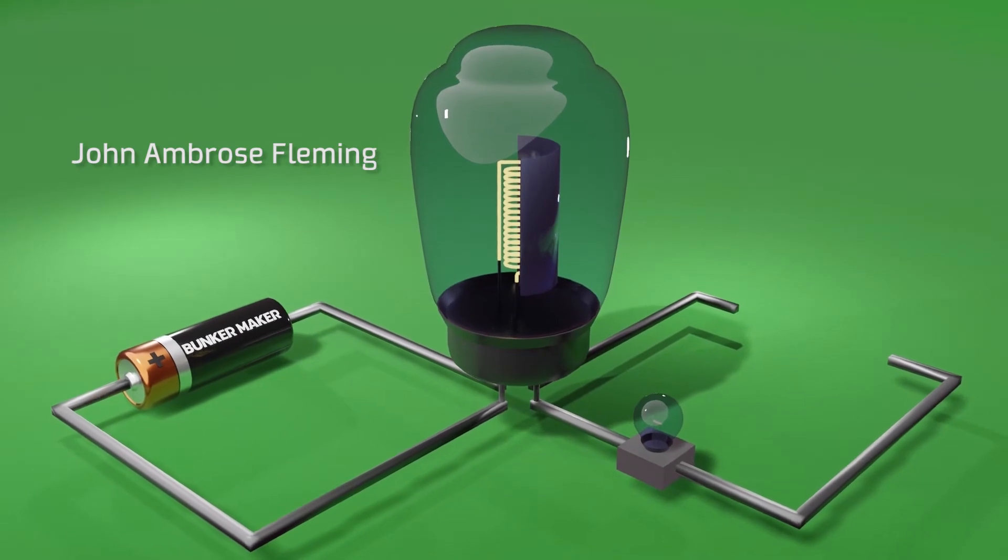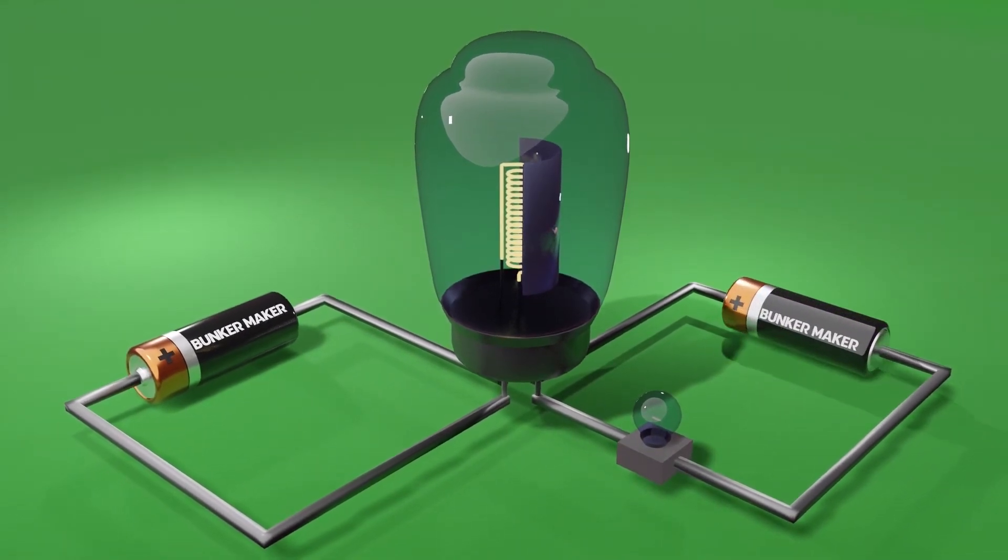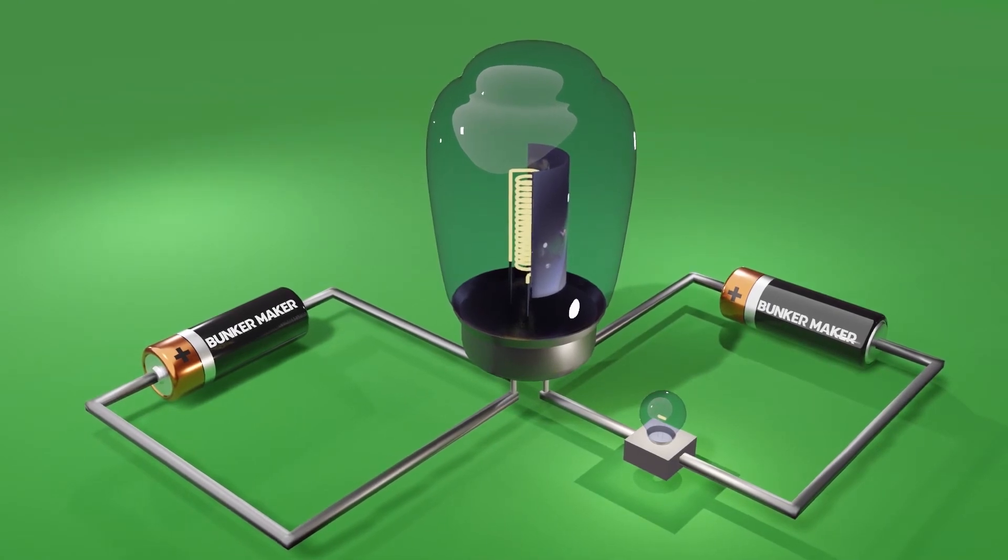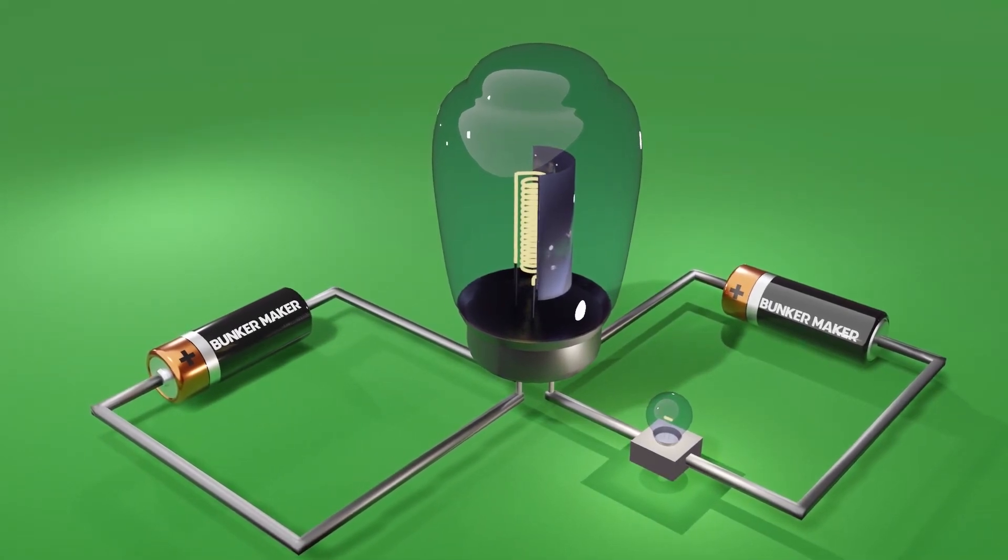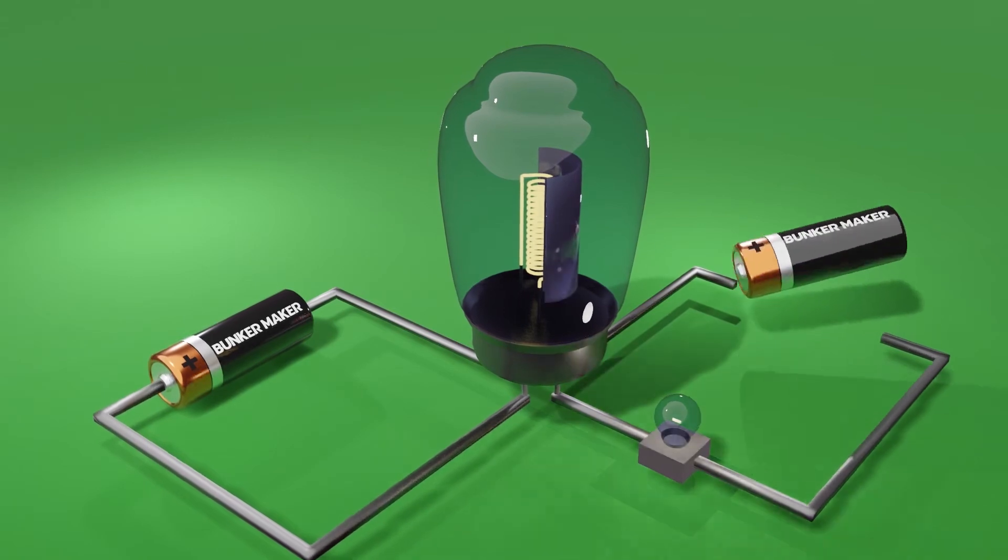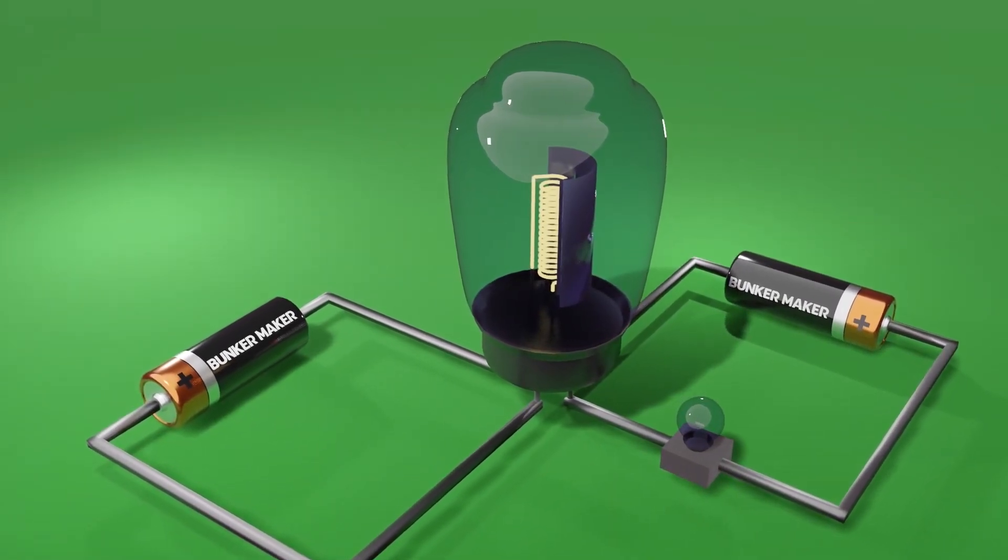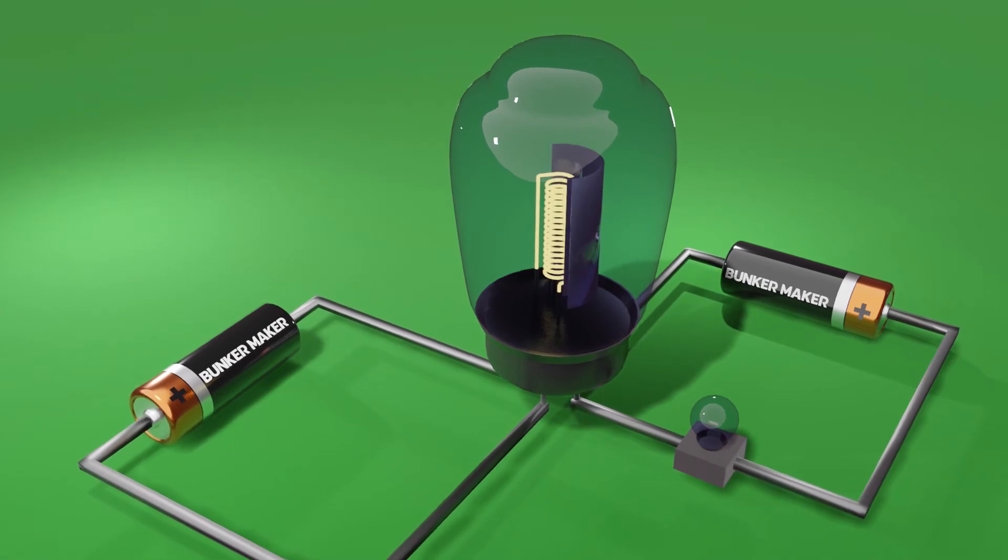He realized that by integrating these components into a circuit, the diode only allowed the passage of the current in one direction, making it an ideal component to rectify alternate signals, or also as a current regulating device, as the amount of charge that passed from the anode to the cathode was directly related to the system temperature.